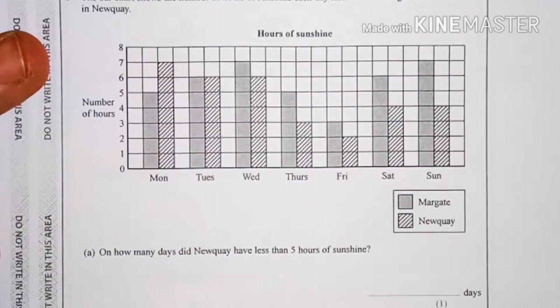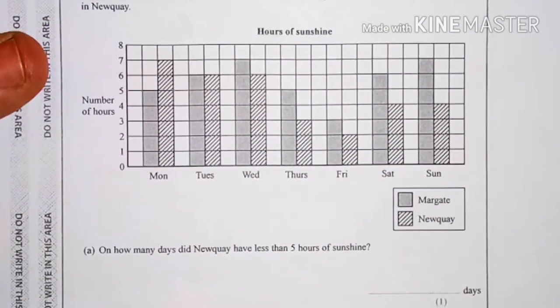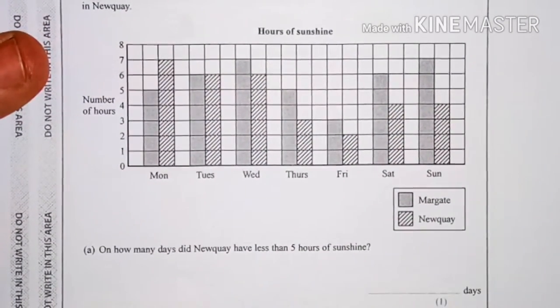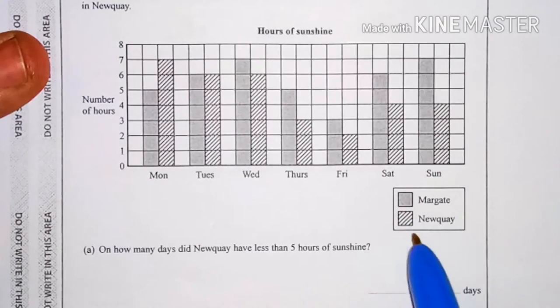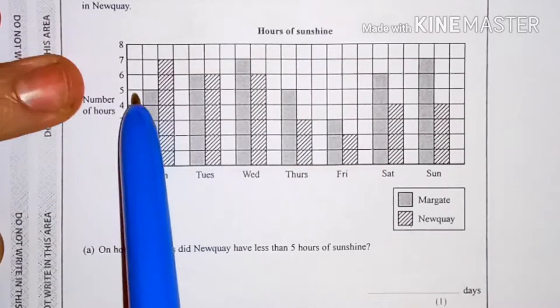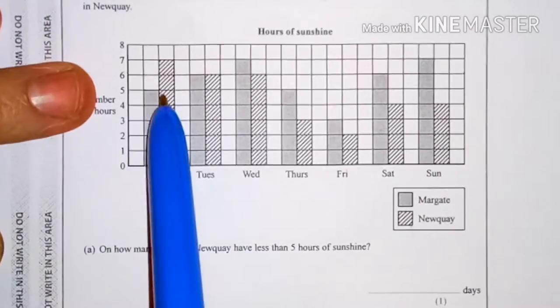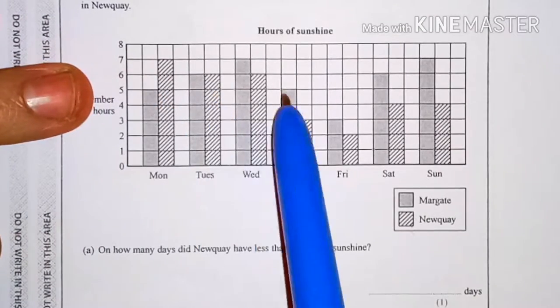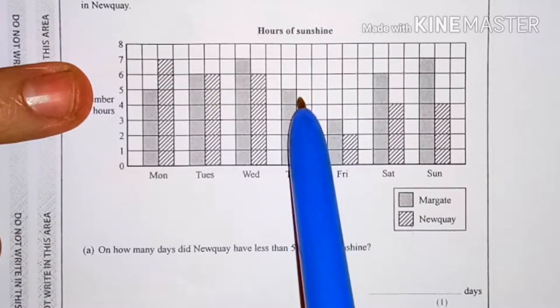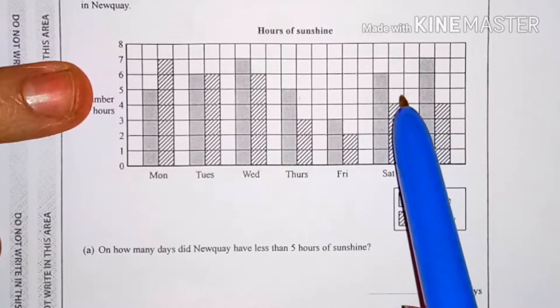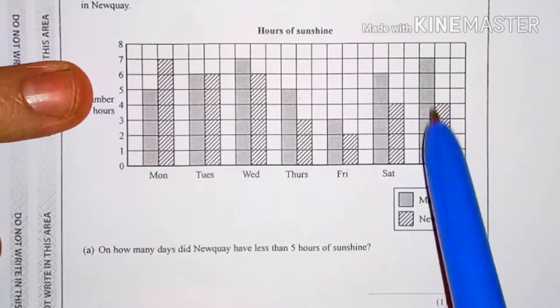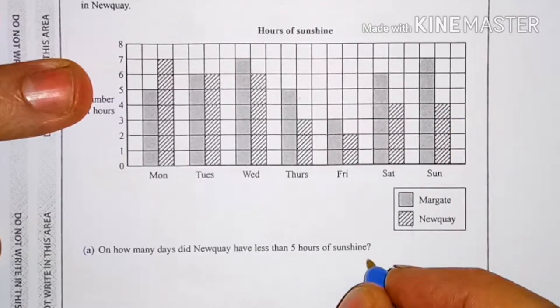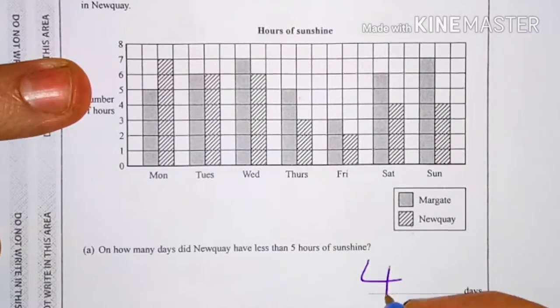How many days did Newquay have less than five hours of sunshine? So Newquay is this one. Five hours is here. Nope, nope, nope. One, two, three, four. So the answer is four.